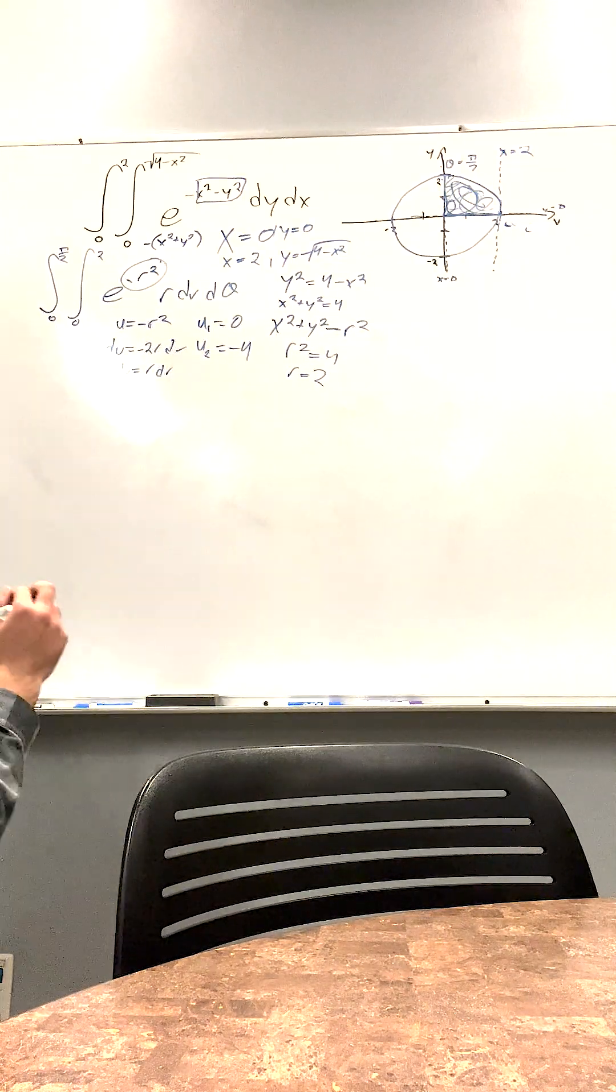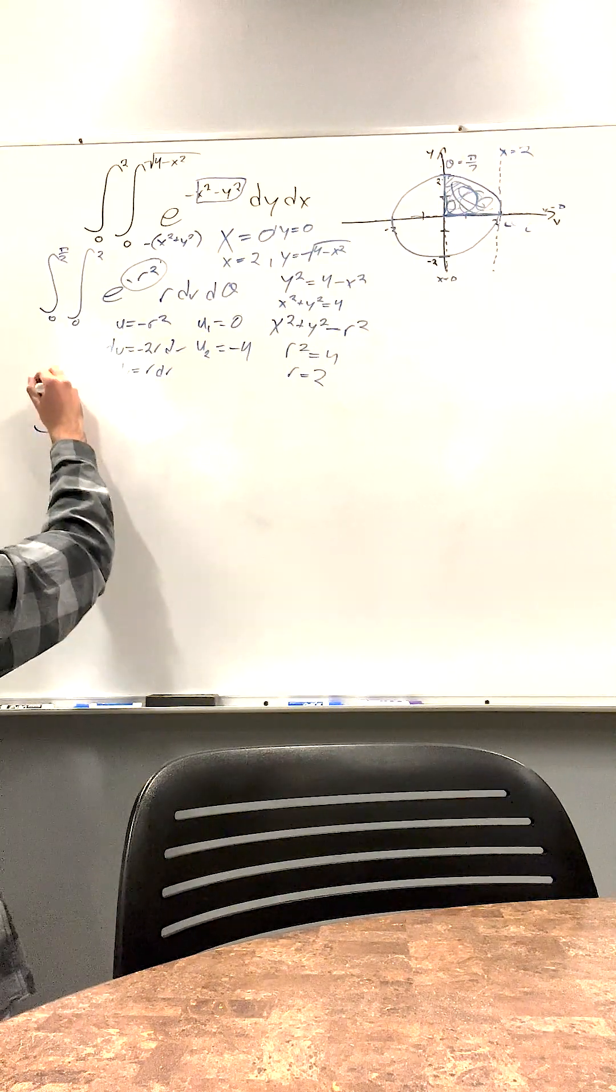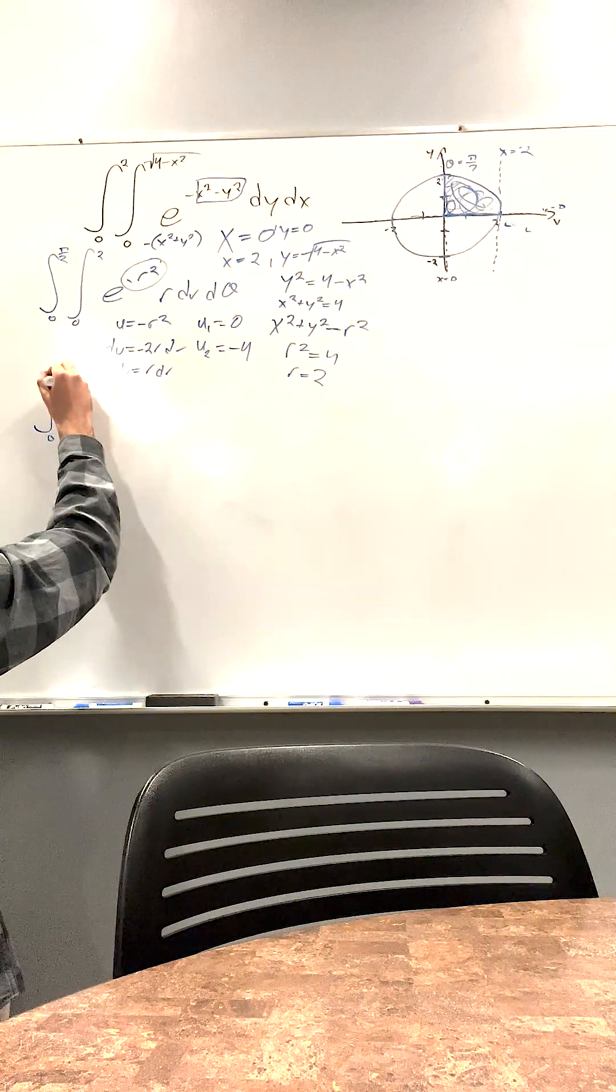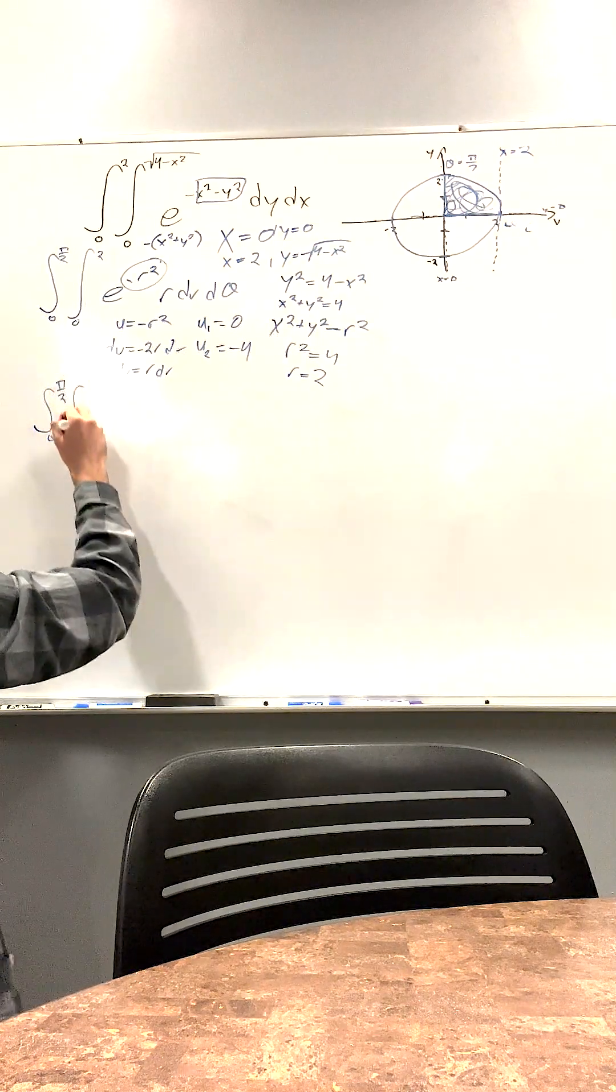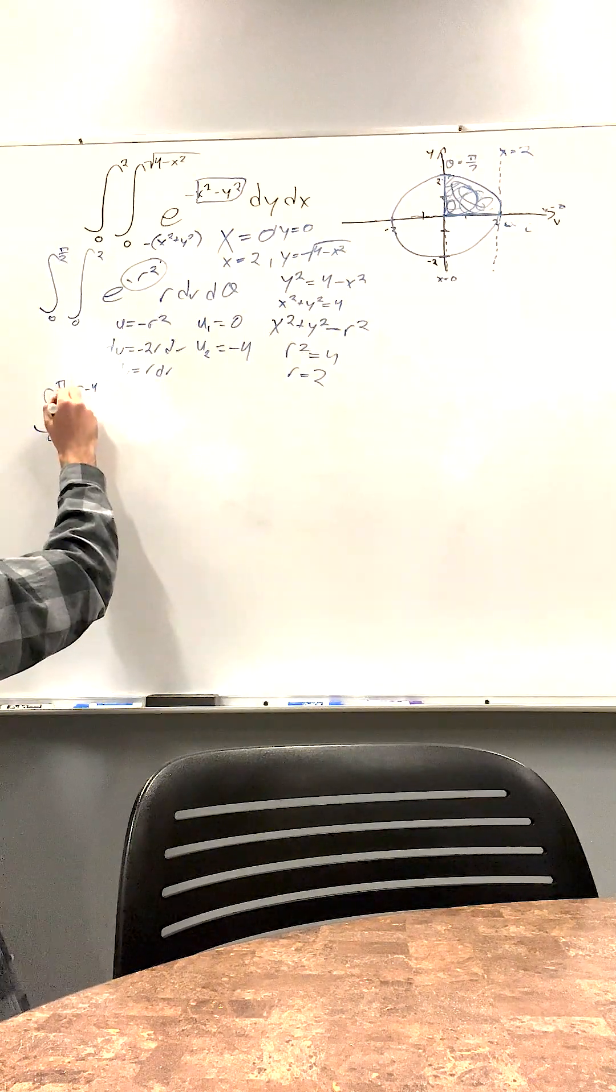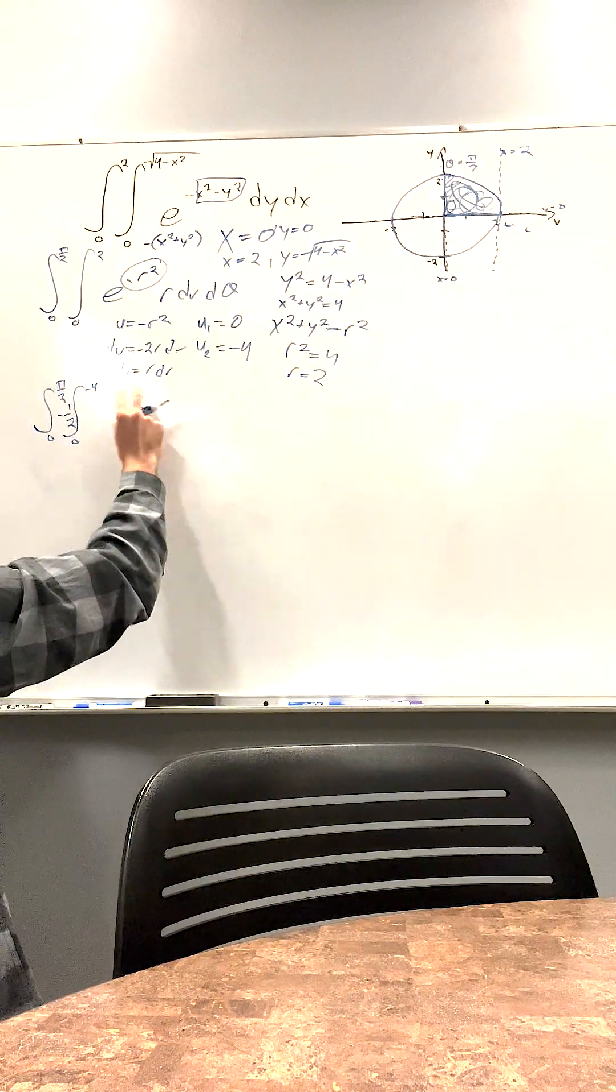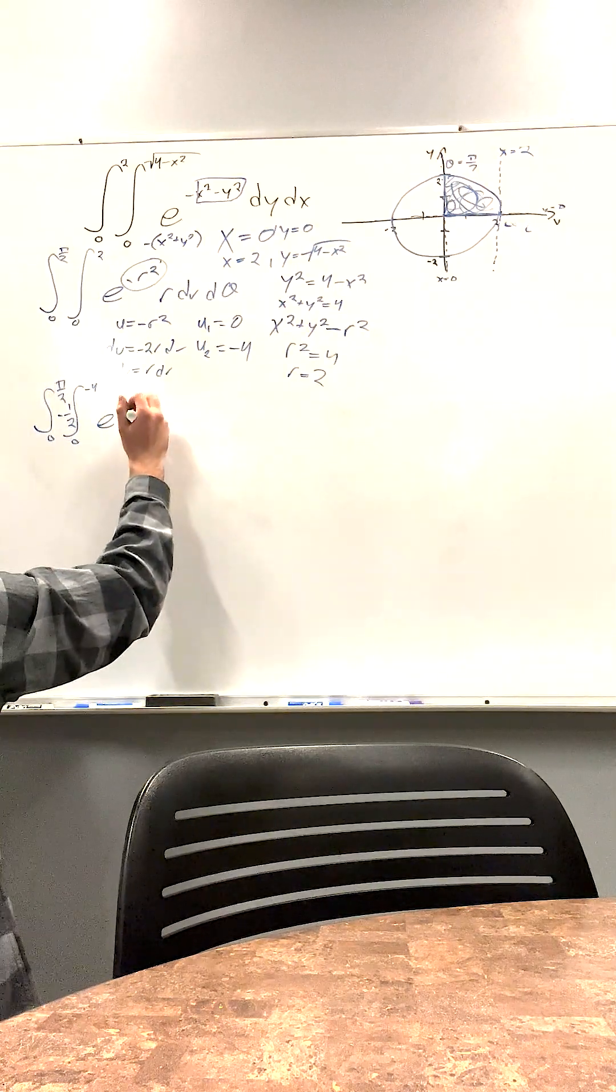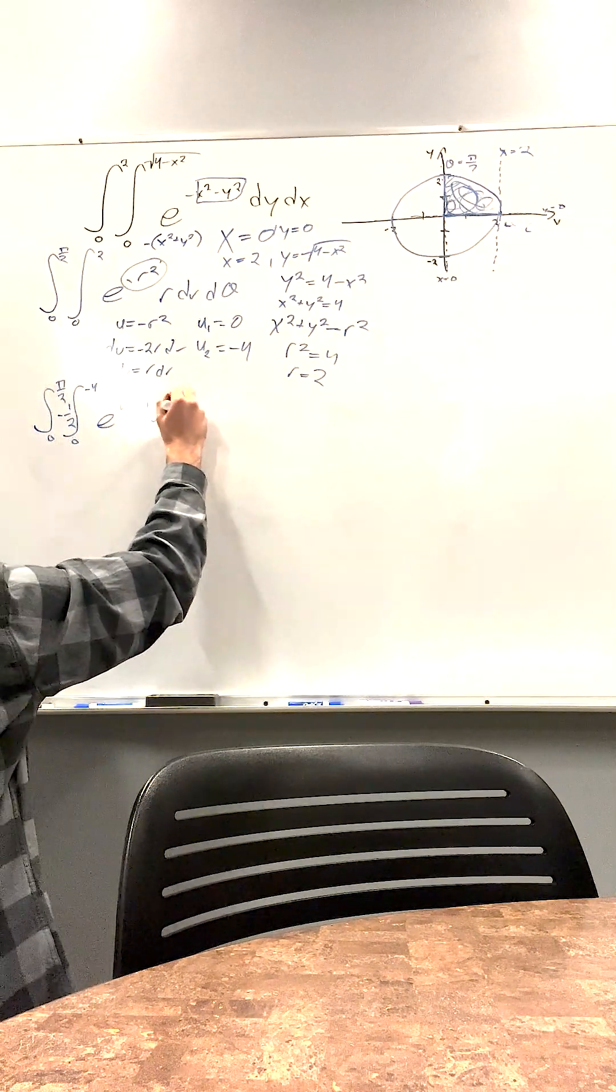Now we can reevaluate our integral. So we have to write our first integral first. 0 to pi over 2 and then 0 to negative 4. And we have to bring out our negative 1 half. And then we write e to the u, du,